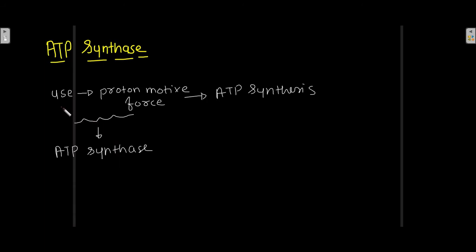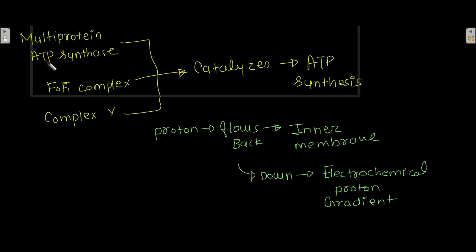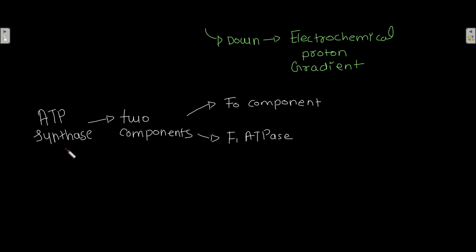ATP synthase catalyzes the use of proton motive force to produce ATP. This multi-protein ATP synthase F0F1 complex, also called complex 5, catalyzes ATP synthesis when protons flow back through the inner membrane down the electrochemical proton gradient. ATP synthase consists of two components: the F0 component and the F1 ATPase.